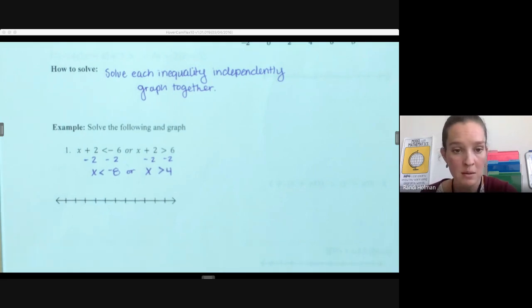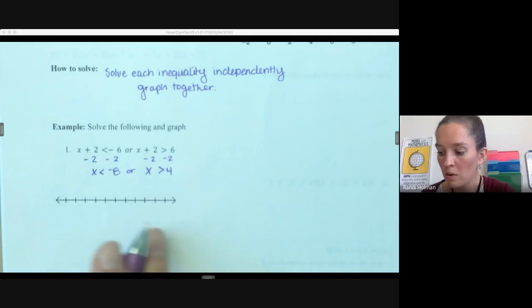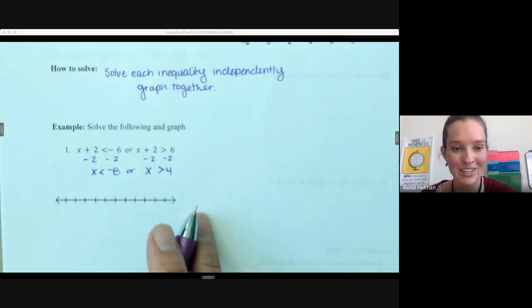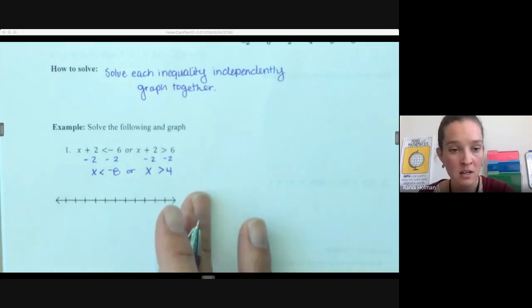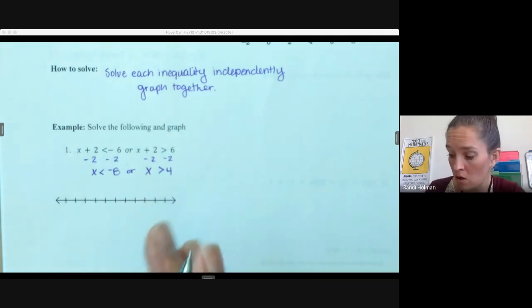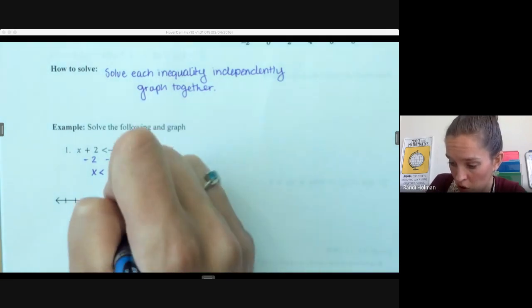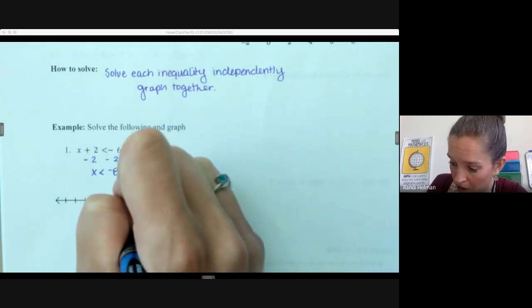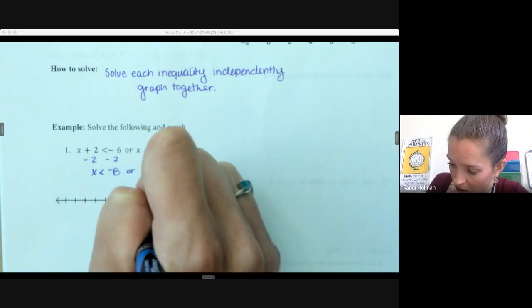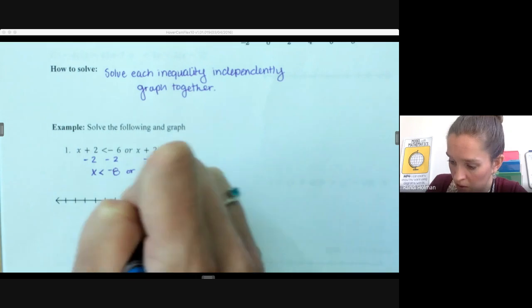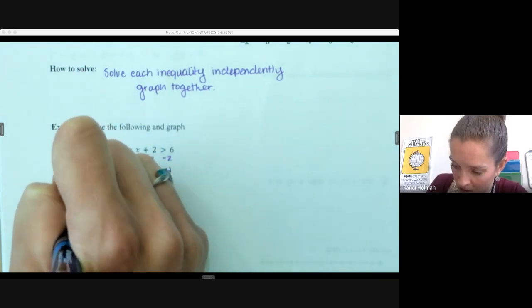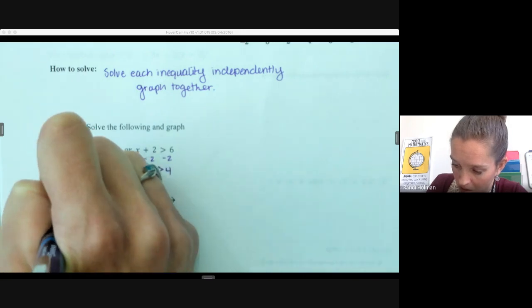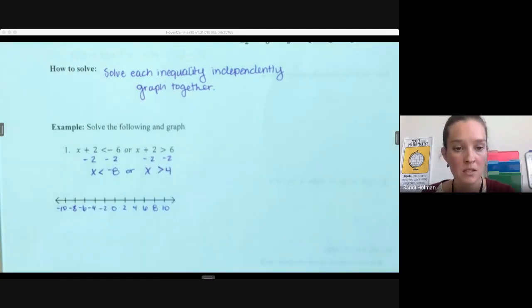And then we're just going to graph them on the same graph. So this is a little trickier with where you put your things. We want to make sure we include negative 8 and 4. So in this case, those are 12 apart, so we might want to stretch our graph a little bit and maybe go up by twos so that we make sure we get to both of those values.